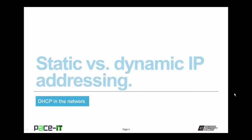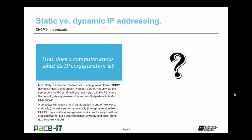We begin by talking about static versus dynamic IP addressing. How does a computer know what its IP configuration is? More than likely, a computer received its IP configuration from a dynamic host configuration protocol server. Not only did the server give the PC an IP address, but it also told the PC where the default gateway was, and more than likely, how to find a DNS server. A computer will receive its IP configuration either statically, which means manually set, or dynamically, which means through a service like DHCP.